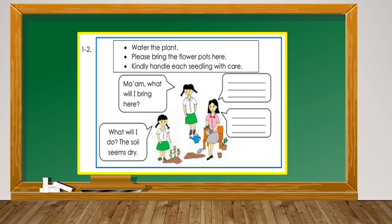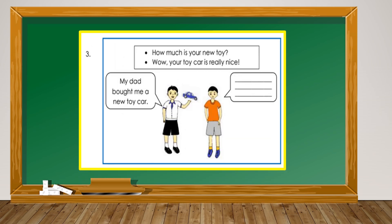For numbers 1 and 2, the options are: 'Water the plant,' 'Please bring the flower pots here,' and 'Kindly handle each seedling with care.' The answer for the first dialogue is 'Please bring the flower pots here.' The answer for the second dialogue is 'Water the plant.' For number 3, the options are: 'How much is your new toy?' and 'Wow! Your toy car is really nice.' The correct answer is 'Wow! Your toy car is really nice.'